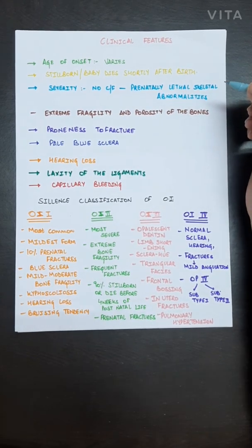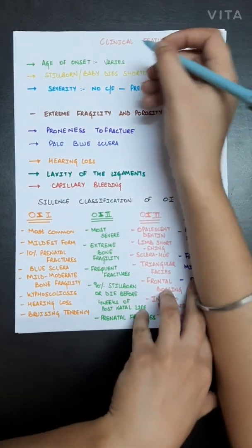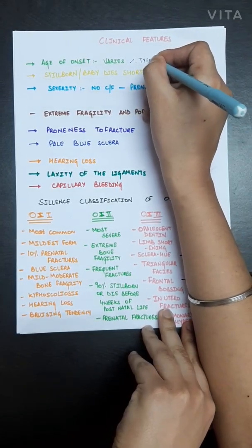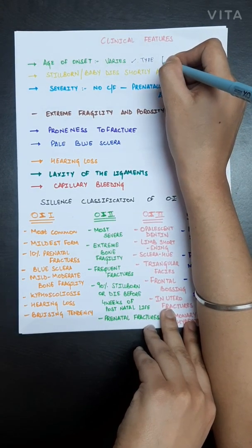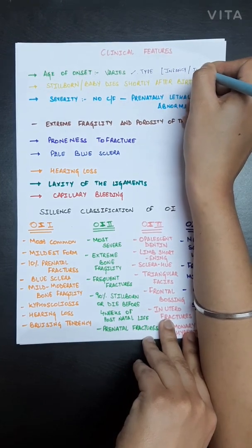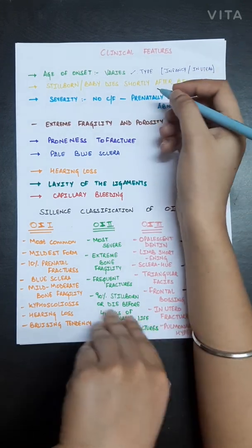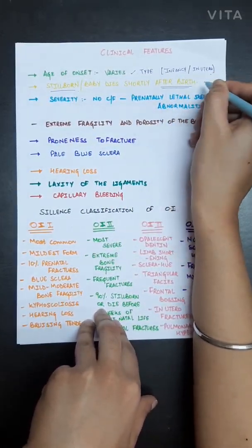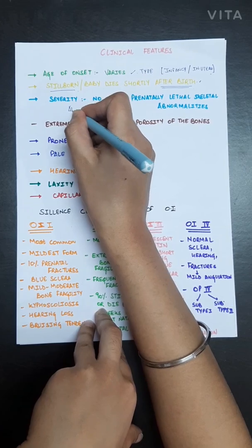The age of onset varies depending upon the type of osteogenesis imperfecta. It may occur at birth, in infancy, or even in utero. In severe cases, the child may be stillborn or die shortly after birth.